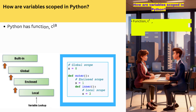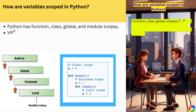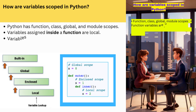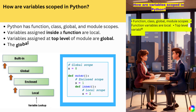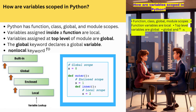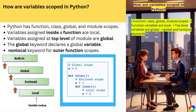How are variables scoped in Python? Python has function, class, global, and module scopes. Variables assigned inside a function are local. Variables assigned at the top level of a module are global. The global keyword declares a global variable. The nonlocal keyword is used for outer function scopes.